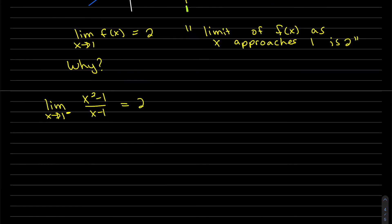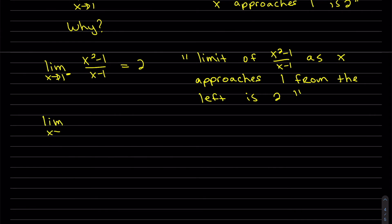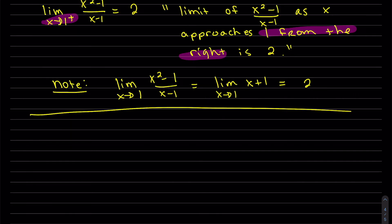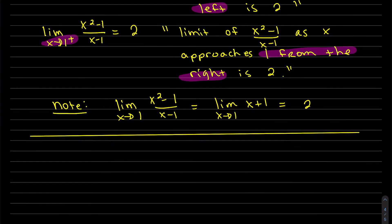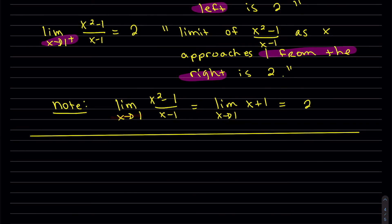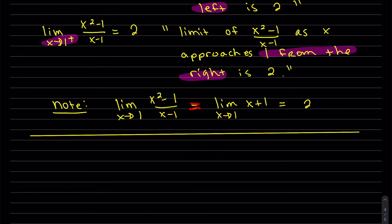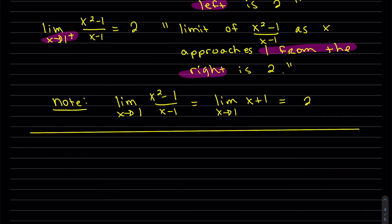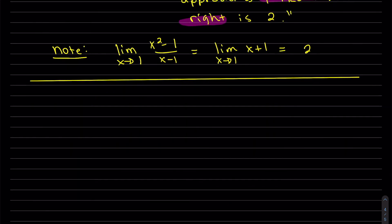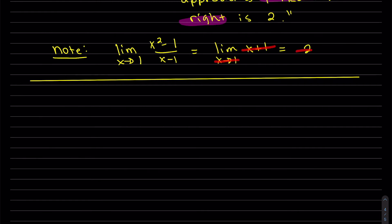The limit as x approaches 1 from the left of (x² − 1)/(x − 1) is equal to 2, and the limit as x approaches 1 from the right is also equal to 2. The limit as x approaches 1 of our original function equals the limit of x + 1 when we reduced it, and both equal 2. You can also see that plugging 1 into x + 1 gives 1 + 1 = 2.